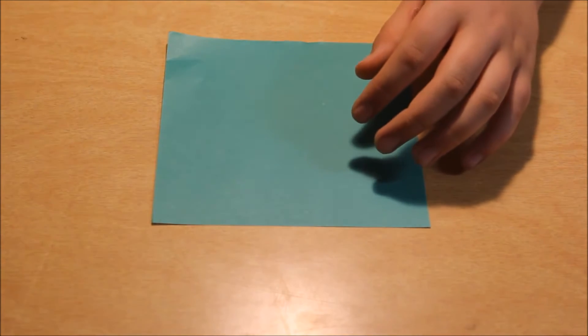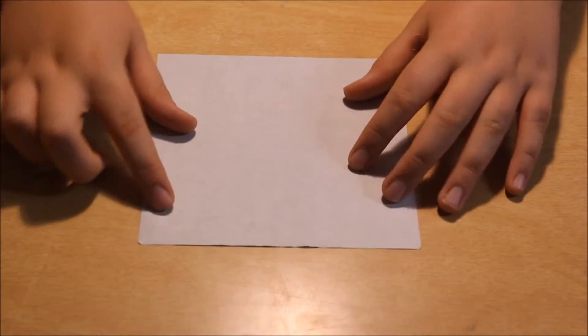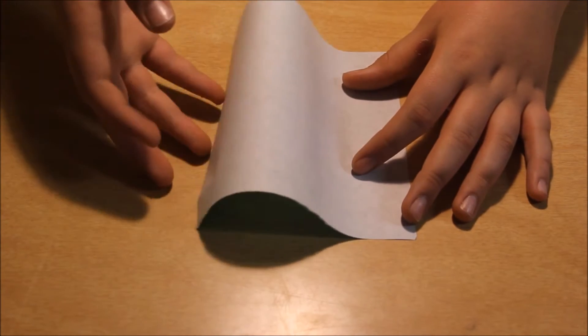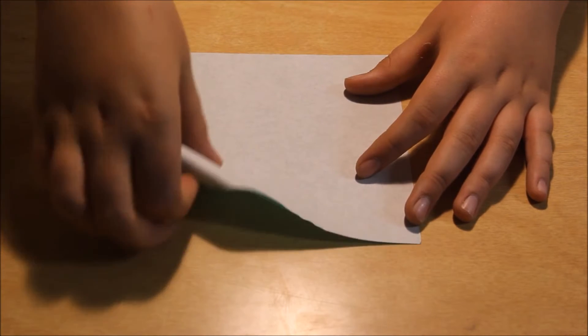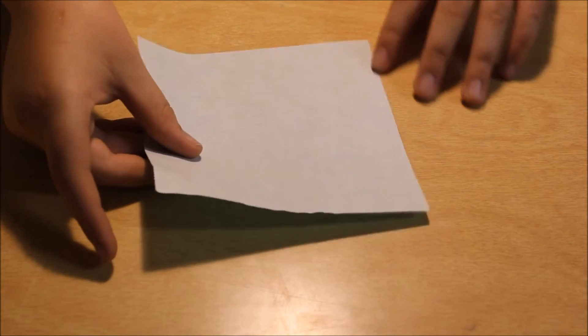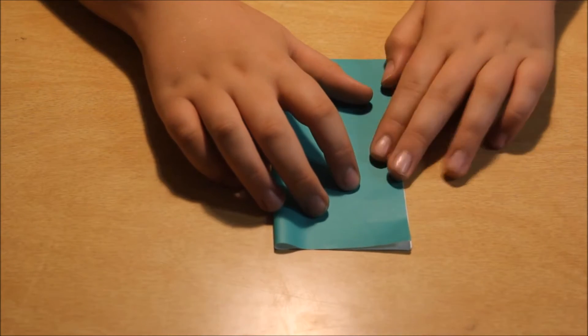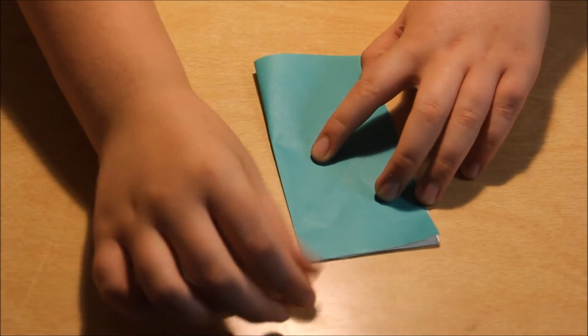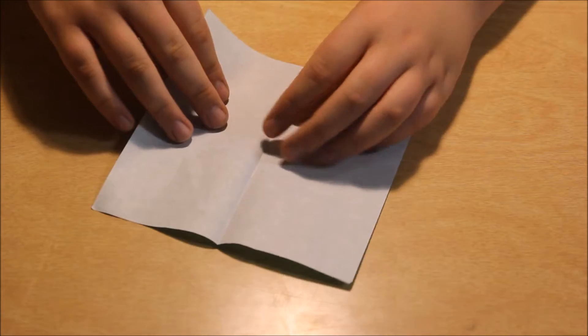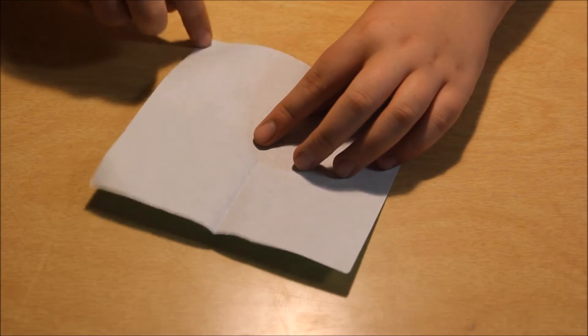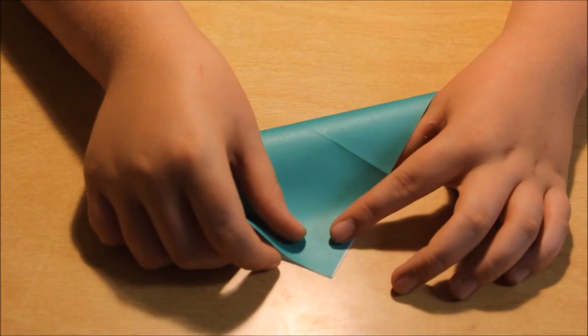Okay, so in this model you start with white side up and you bring this edge of your paper to this edge. Just like that. Now bring this edge to that edge, and those two corners together.